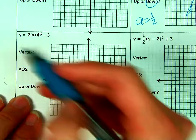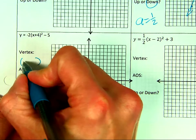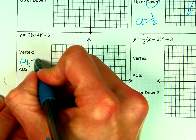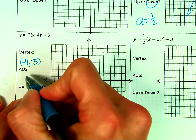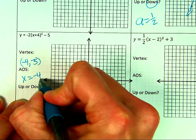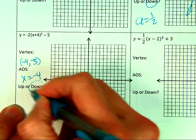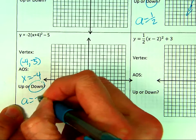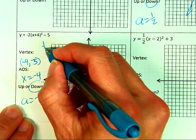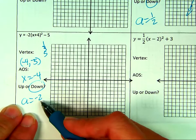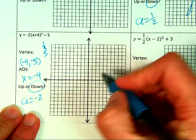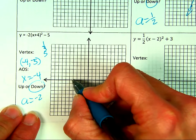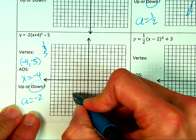Now for the next one — I'm assuming you know how to find the vertex from vertex form; if not, watch the other video. The axis of symmetry is x = negative 4, and it opens down because A is negative 2. So with the 1, 3, 5 pattern doubled and going downward, I go to my vertex at (−4, −5).